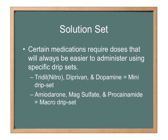Certain medications require doses that will always be easier to administer using specific drip sets. Some medications have numbers so high to count drops per minute that you're going to want to go with a macro set — a 10-drop or 20-drop set. Those medications might include amiodarone, mag sulfate, or procainamide because they're given in 10-to-20 minute increments. For instance, amiodarone is given as 150 milligrams over 10 minutes as a loading dose to avoid dropping blood pressure. For maintenance drips — such as Cardizem, Diprivan, or dopamine — it's very important not to infuse too much volume too quickly, so you use a mini drip set that you can really titrate.